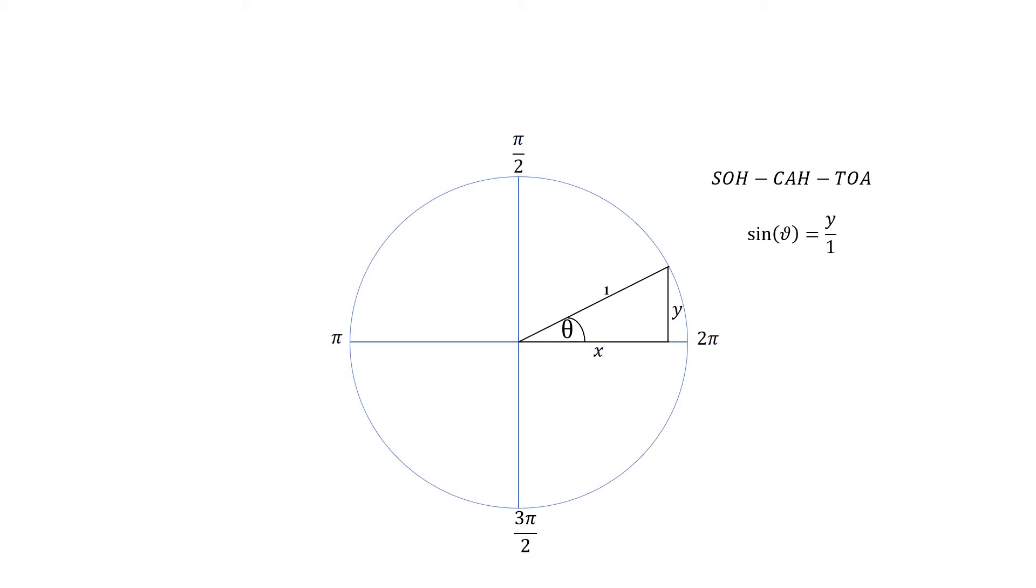So we can relate sine of theta as being opposite on hypotenuse, so y over 1, because y is the opposite and 1 is the hypotenuse. Now we can rearrange this and get that y is equal to sine of theta. So basically the vertical height of that triangle is going to be our sine of theta.